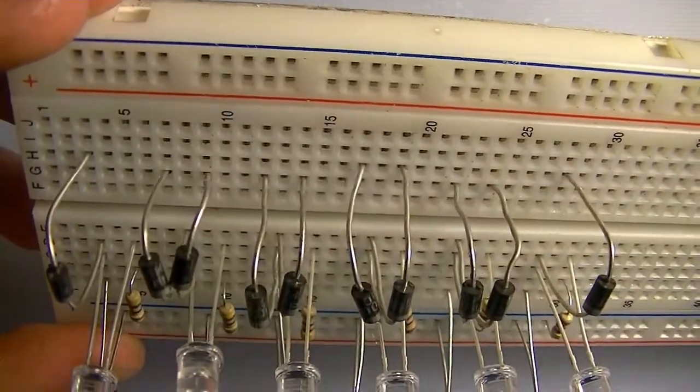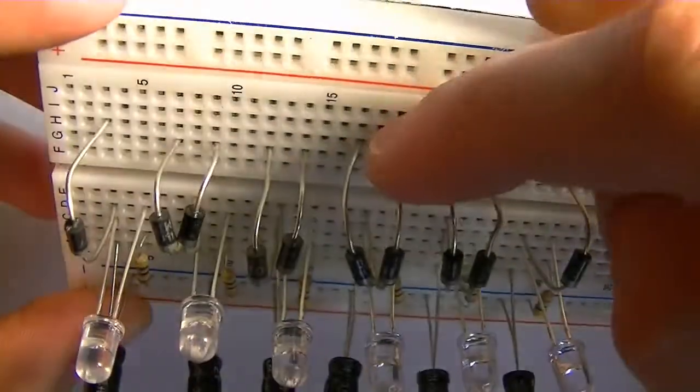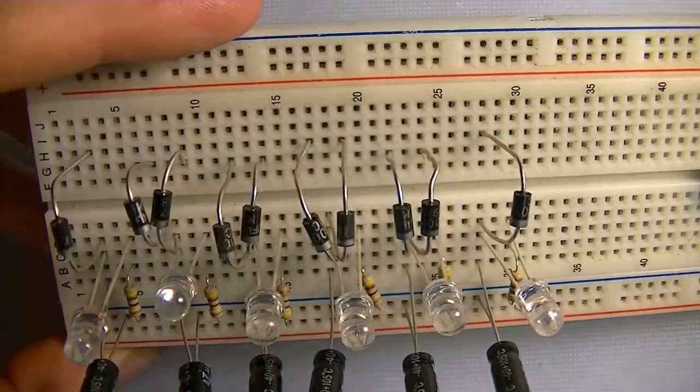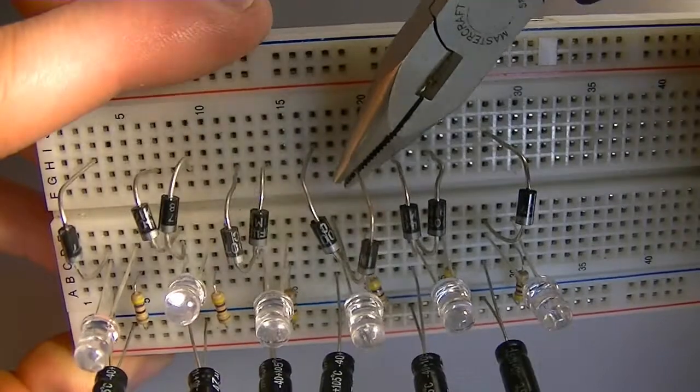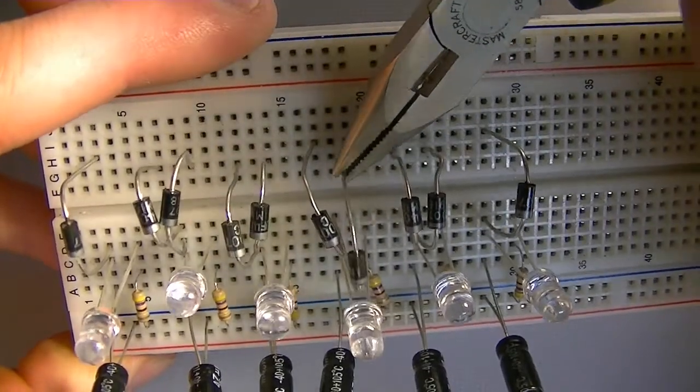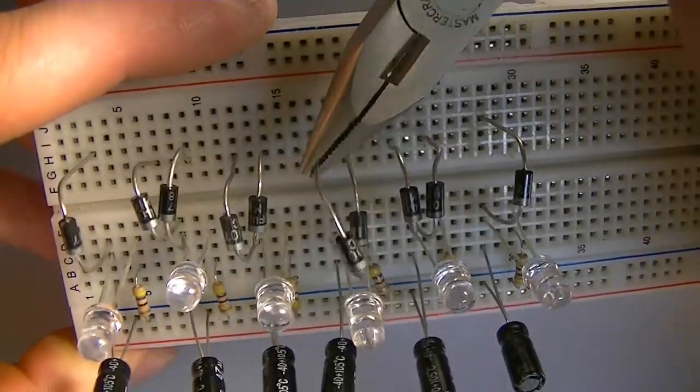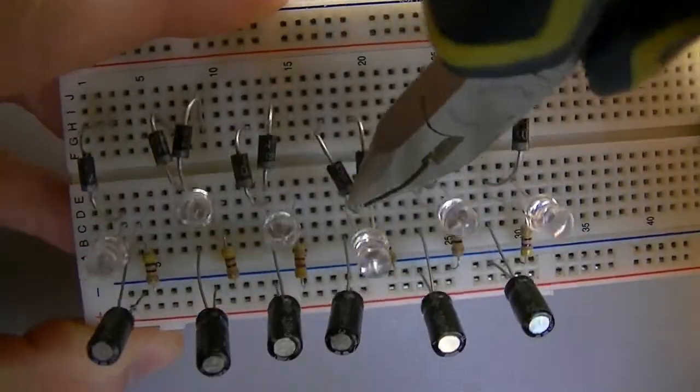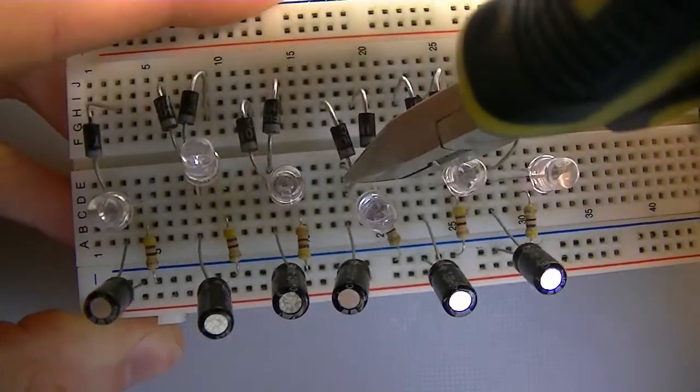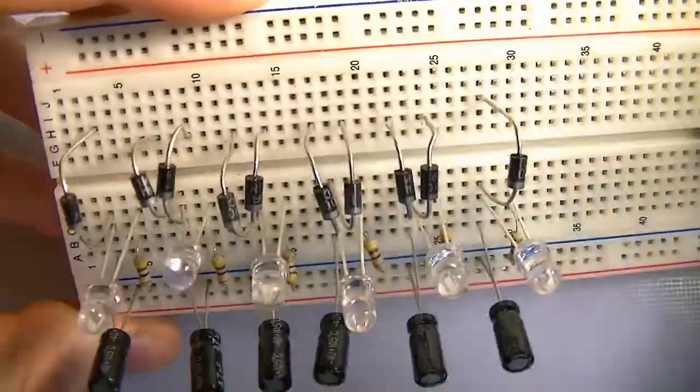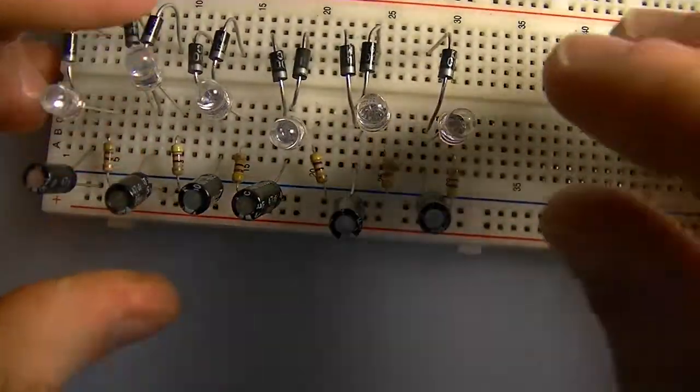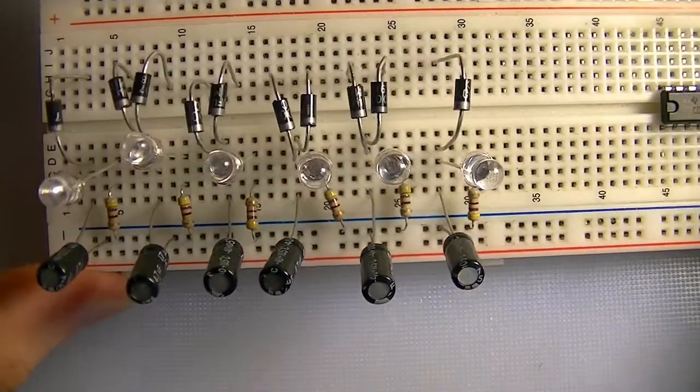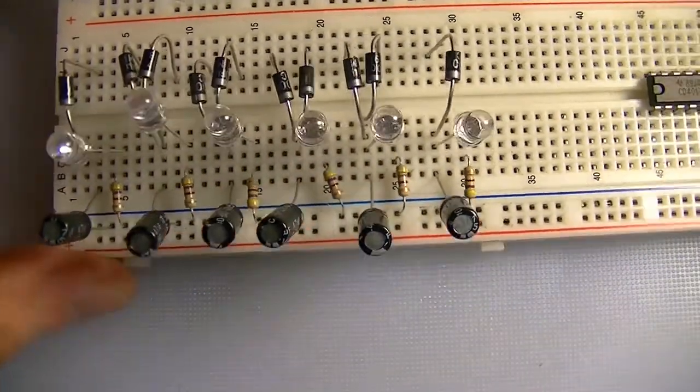And they all are spaced out there. That guy shouldn't be that far out. We can use our needle nose for that. There we go. So they all look nice. So that finishes off the output of our circuit, the display portion.